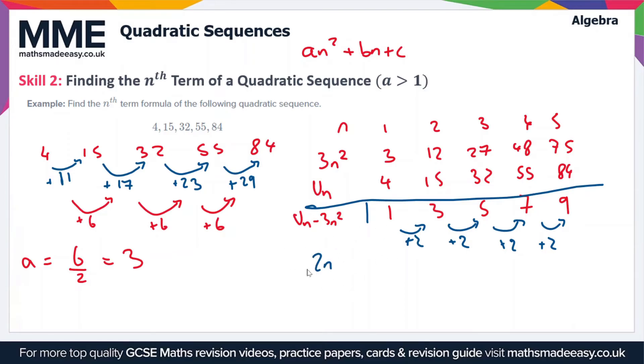And it's going to be 2n plus something or 2n minus something. And the way we work out what that's going to be is we write the sequence 2n, which is just the 2 times table. So that's 2, 4, 6, 8, and 10. Now we look at the difference between these values and the values in the sequence un minus 3n squared.